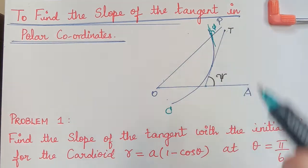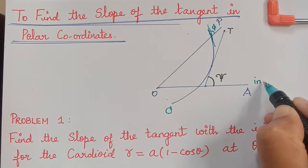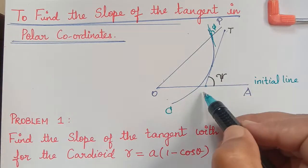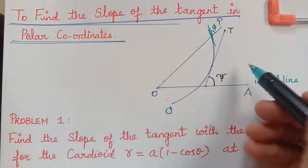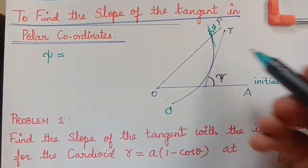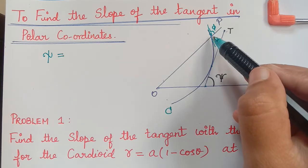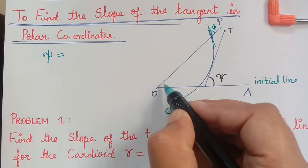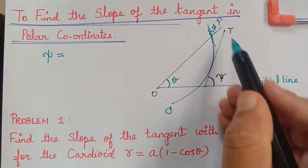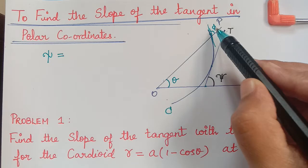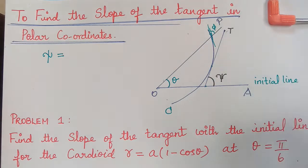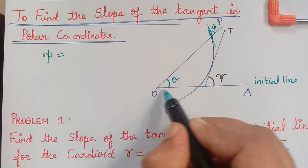OA will be the initial line. The angle between this initial line and the tangent gives us the slope of the tangent, and we take that to be xi. Theta is the angle between the initial line and the radius vector. Phi is the angle between the radius vector and the tangent at the point where the radius vector crosses the curve. And xi is the angle between the tangent at a point and the initial line.